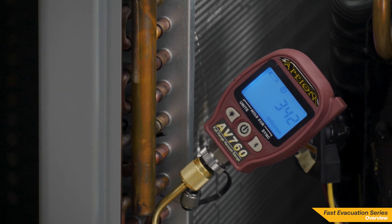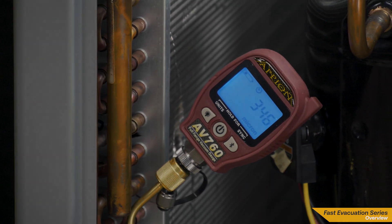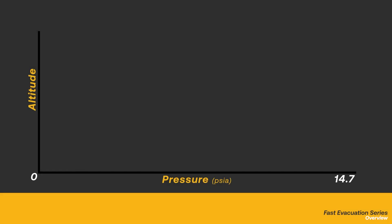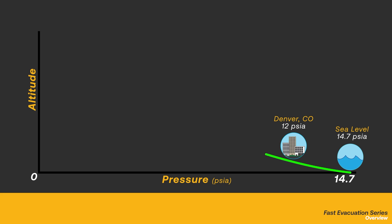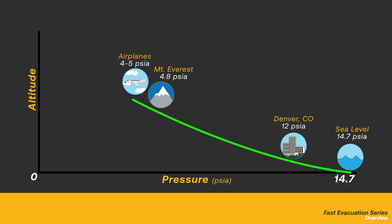To start, we should take a moment to understand what vacuum is. At sea level, atmospheric pressure is 14.7 psia, or absolute, created by the gravitational effect on the Earth's atmosphere. Atmospheric pressure will reduce as altitude increases. Sometimes vacuum is described as a negative pressure, which isn't entirely true. Vacuum is still a positive pressure above 0 psia, but because it is below atmospheric pressure, we conceive it as a negative pressure.